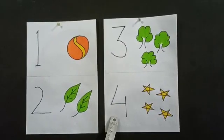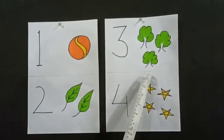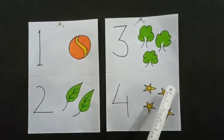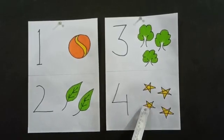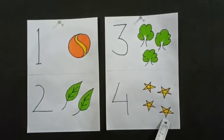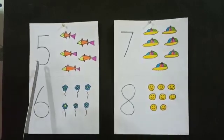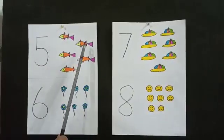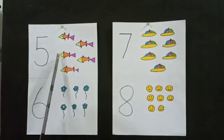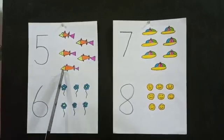Number 4. How many stars are there? One, two, three, and four. Now number 5. One, two, three, four, and five.